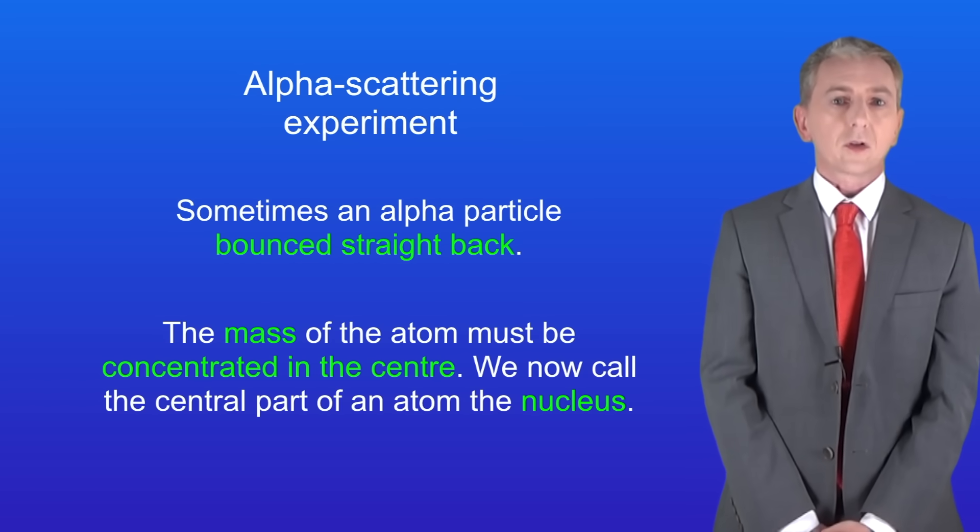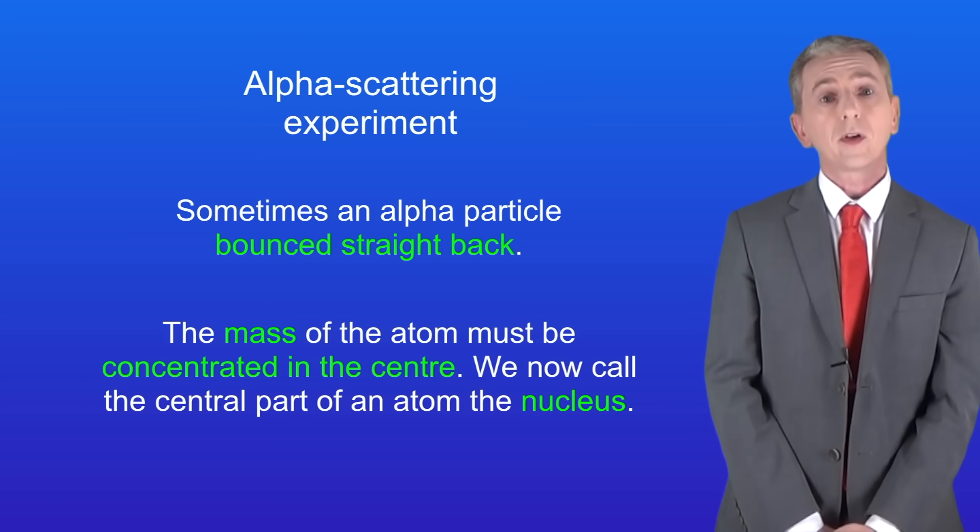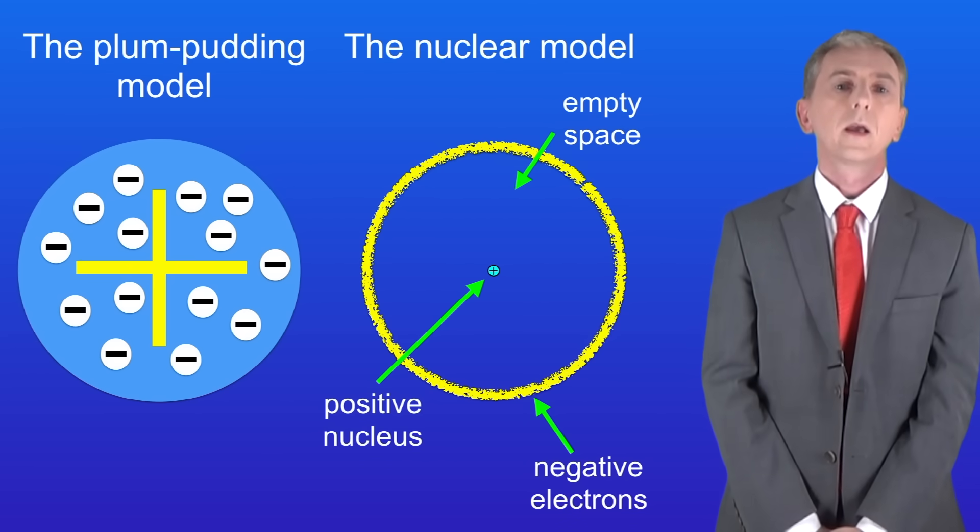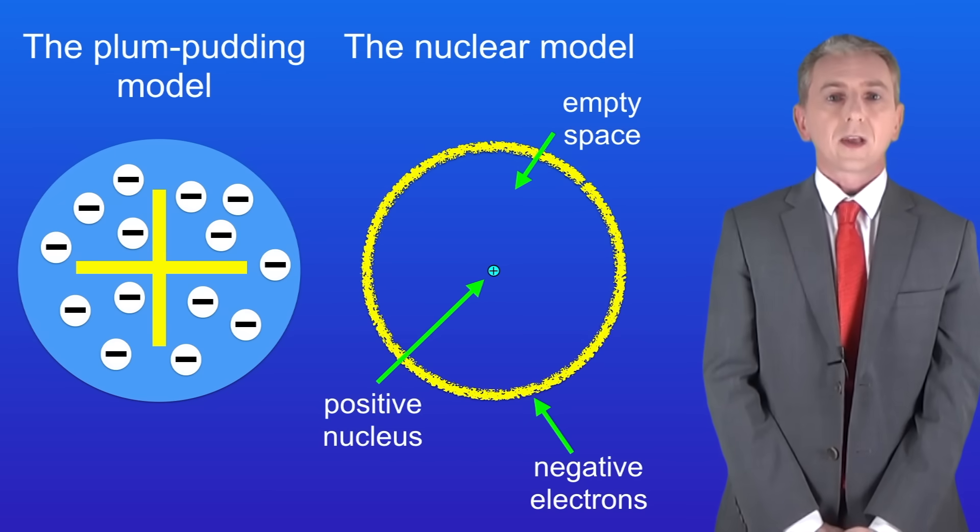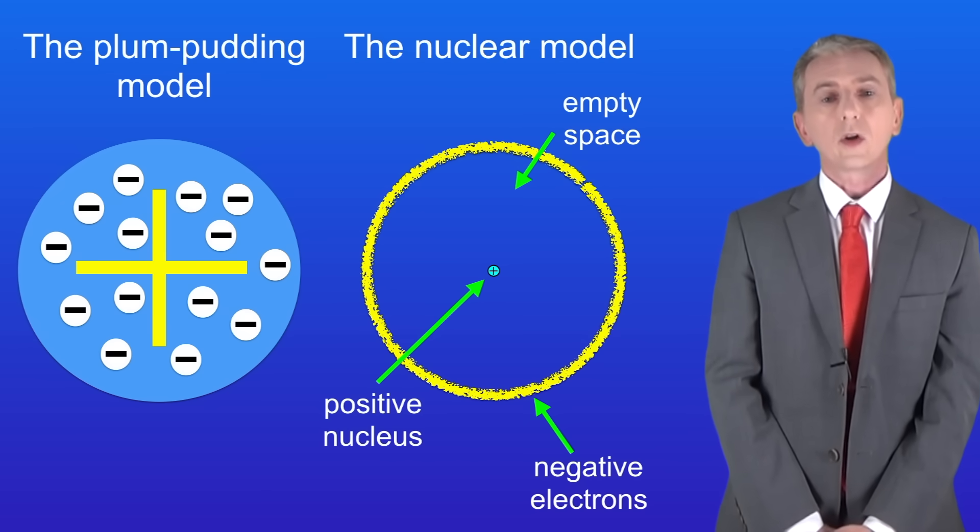So from these results scientists replaced the plum pudding model with the nuclear model, and I'm showing you that here. Most of the atom is simply empty space. In the center we've got a tiny positive nucleus containing almost all of the mass, and around the edge we've got negative electrons.